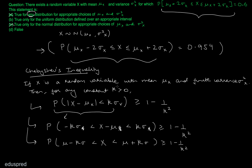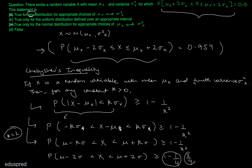This holds for any constant k greater than 0. Let me write it for k equal to 2. Substituting k = 2: the probability that μ minus 2σ is less than X less than μ plus 2σ must be greater than or equal to 1 minus 1/4, which equals 3/4, or 0.75. So according to Chebyshev's inequality, this probability must be greater than or equal to 0.75, regardless of the distribution of X.